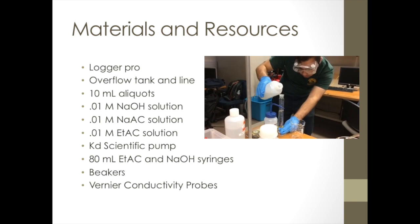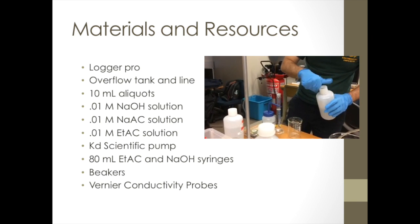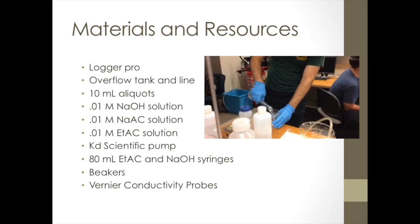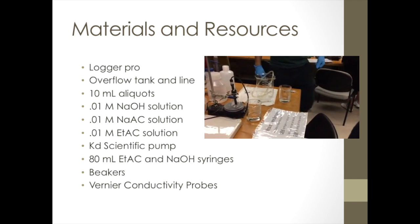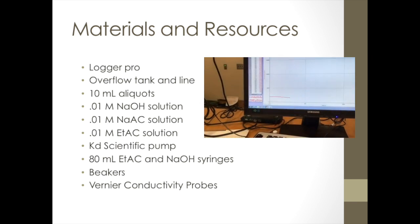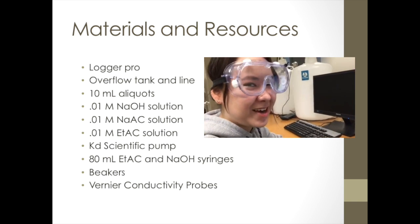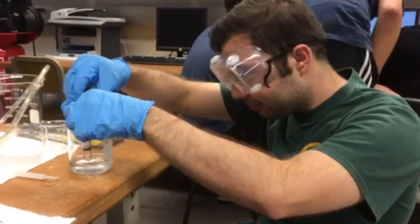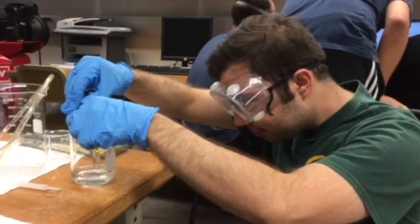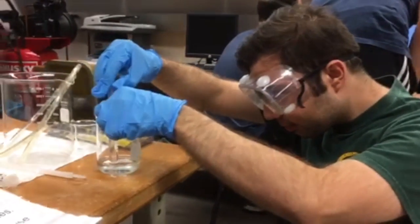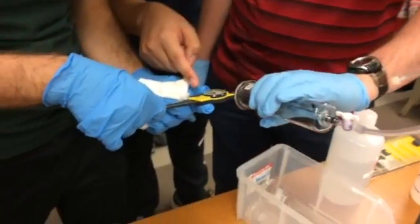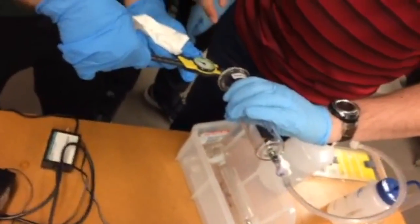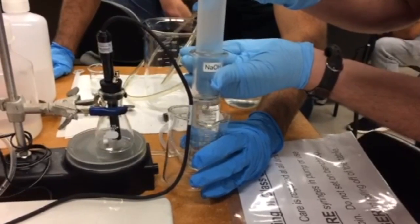Also, make sure to have your KD Scientific pump ready. You will make sure that you recognize your 80 milliliter syringes for ethyl acetate and sodium hydroxide, which are labeled accordingly. And make sure to have your Vernier conductivity probes. Your conductivity probes should be calibrated with 0.01 molarity solution of sodium hydroxide and sodium acetate. For the first run of calibration, you should use the 10 milliliter aliquots to transfer 10 milliliters of solution of sodium hydroxide from sodium acetate. For the second run, the opposite should be done. The pump should be prepared by measuring the diameter and length of the special syringes for ethyl acetate and sodium hydroxide. These numbers should be input into the pump with the pump setting set to 1.2 liters per minute.